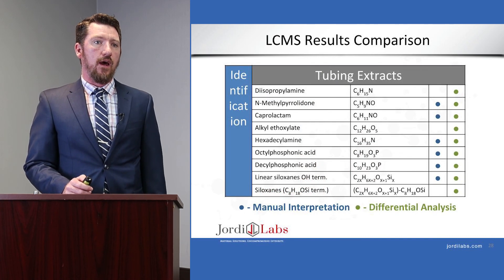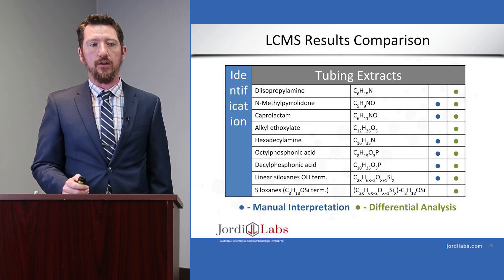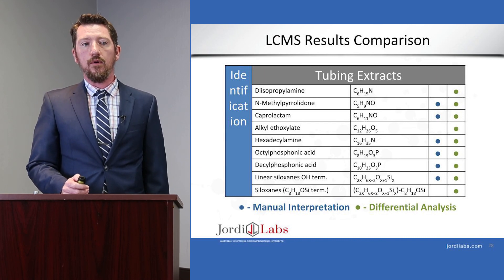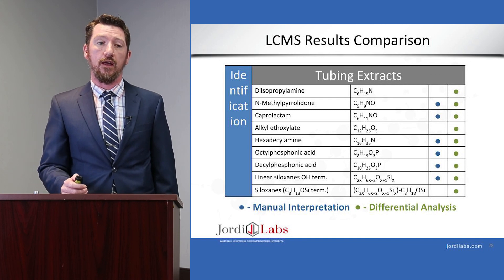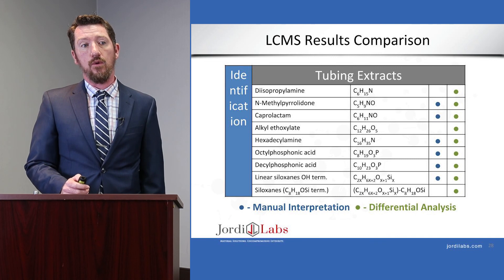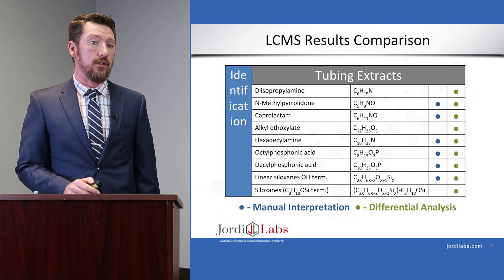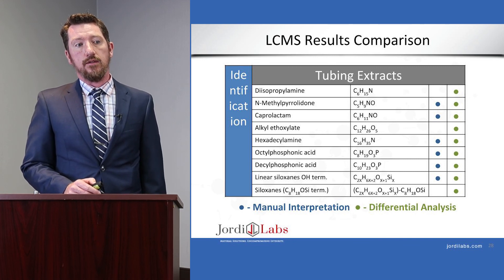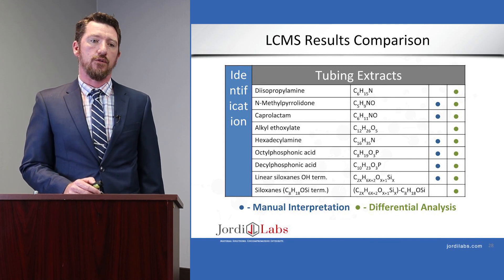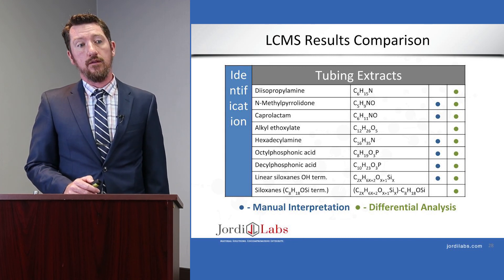Looking at the results from our tubing extract, we can compare what a reasonable number of compounds would be detectable through manual interpretation versus those detected using this automated differential analysis approach. In three cases, components present in the tubing extracts were missed manually but easily identified by the differential analysis. These included diisopropyl amine — a small molecule — as well as a whole series of different siloxane oligomers with an alkyl chain on their end, and additionally an alkyl ethoxylate.